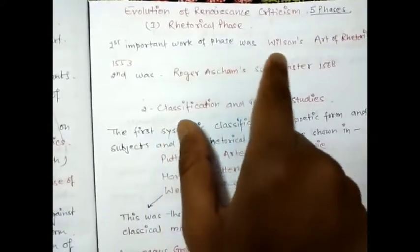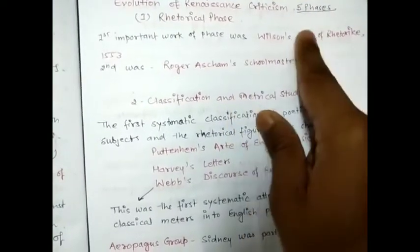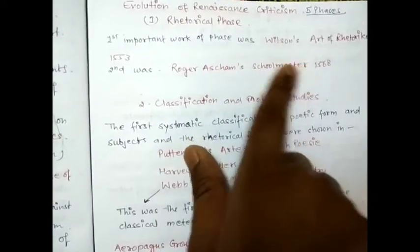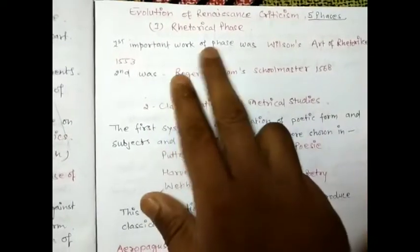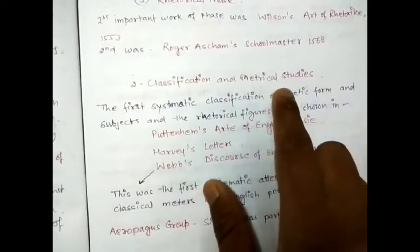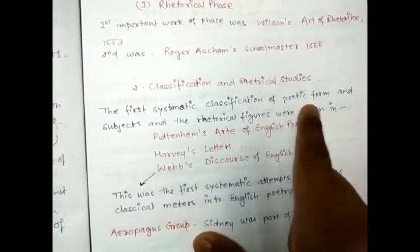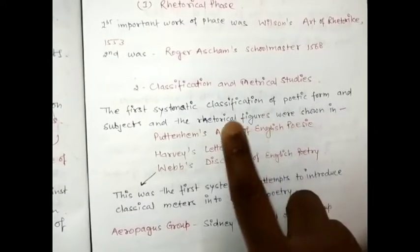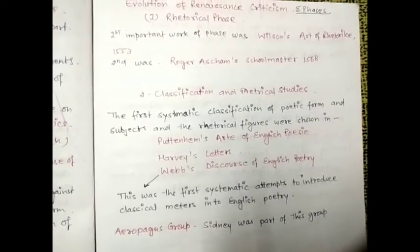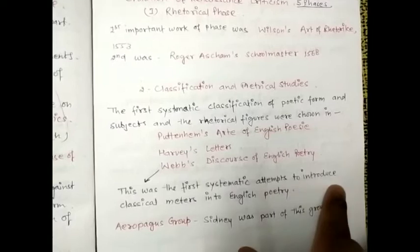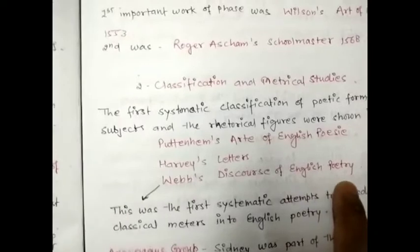Now let's talk about the evolution of Renaissance criticism — five phases. The first important work in the rhetorical phase was Wilson's Arte of Rhetorique. The second was Roger Ascham's Schoolmaster, published in 1568. For classification and metrical studies, the first systematic classification of poetic form, subject, and rhetorical figures were shown in Puttenham's Art of English Poesy. The second was Harvey's Letters and Webb's Discourse of English Poetry, which was the first systematic attempt to introduce classical meter into English poetry.